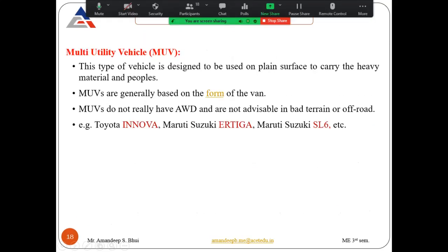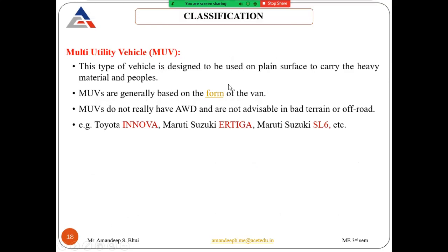Multi-utility vehicles (MUVs) are designed to carry heavy loads and people on roads and flat surfaces. They are generally van-based, do not have all-wheel drive or four-wheel drive, and are not suitable for off-road use. Examples include the Toyota Innova, Maruti Suzuki Ertiga, and Maruti Suzuki SL6.